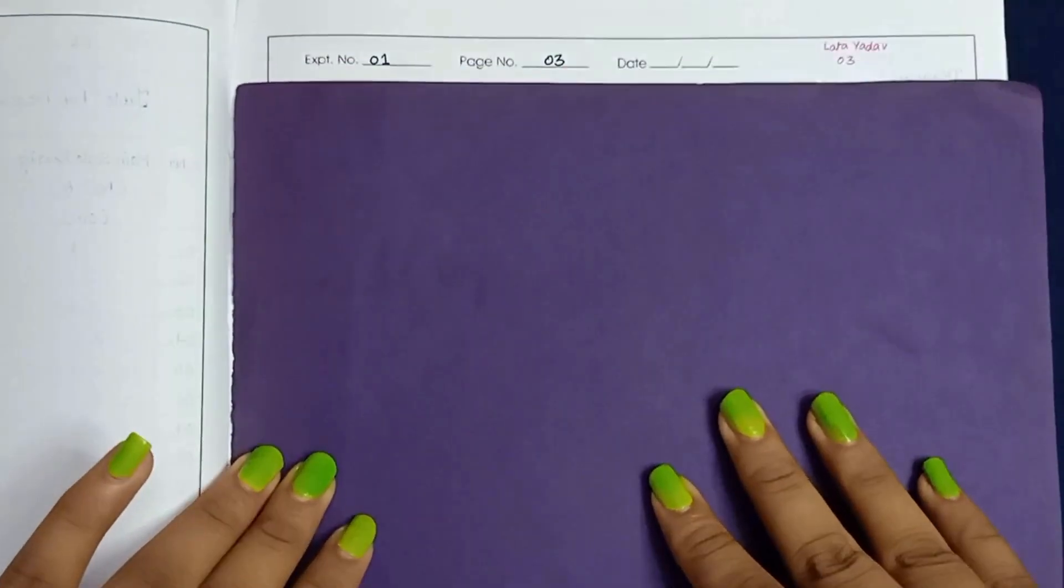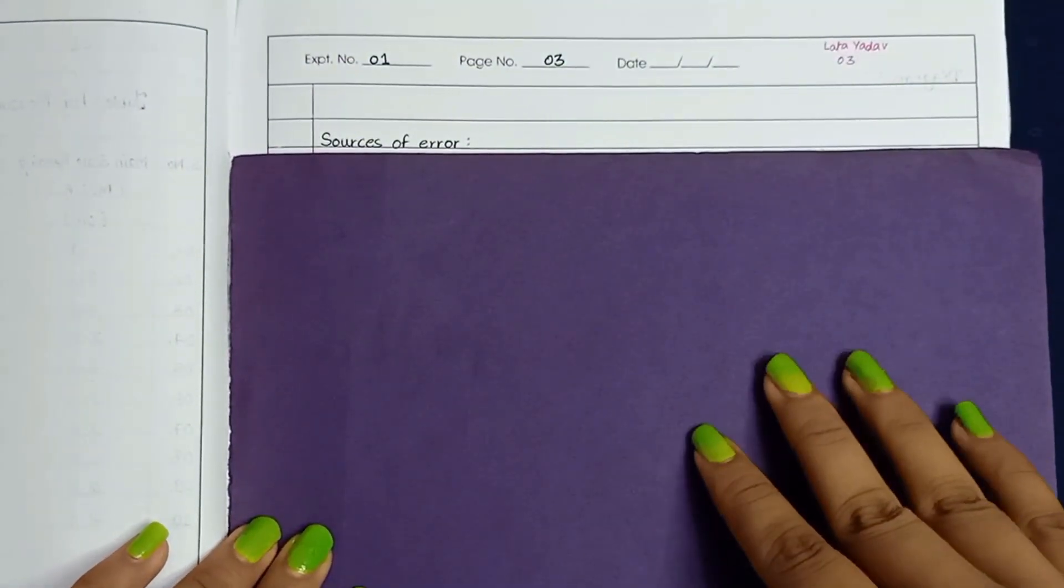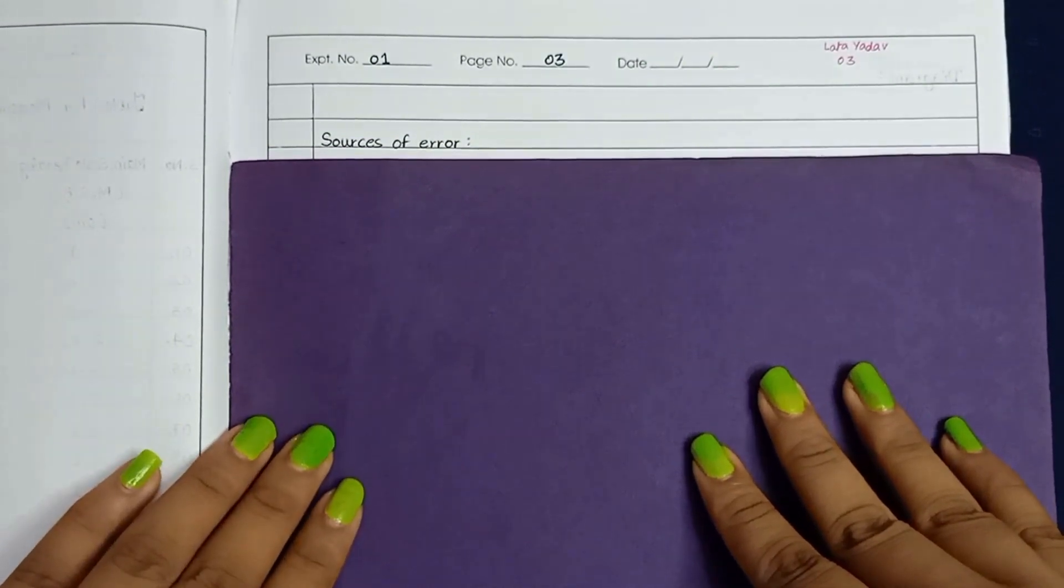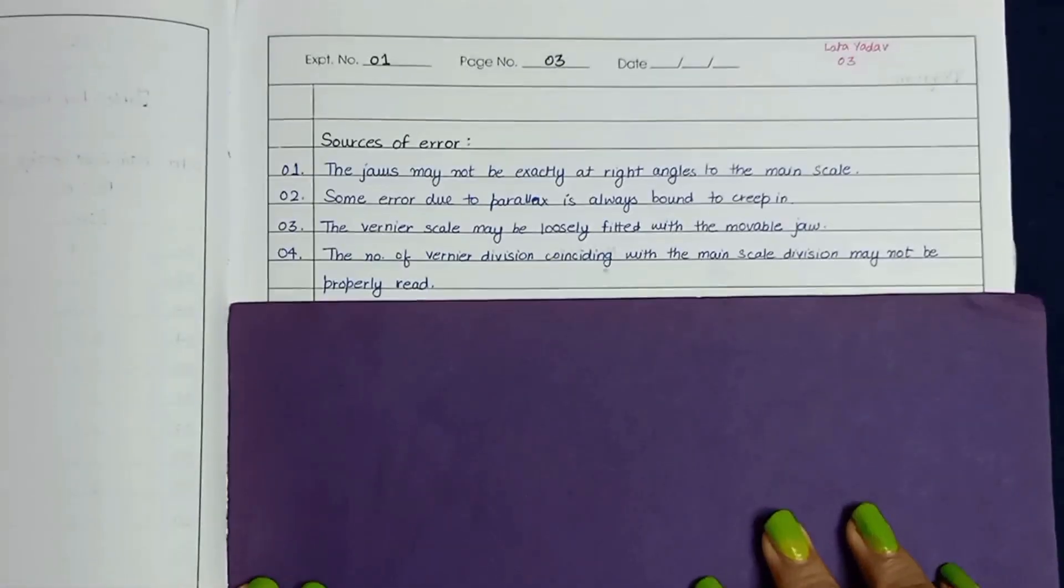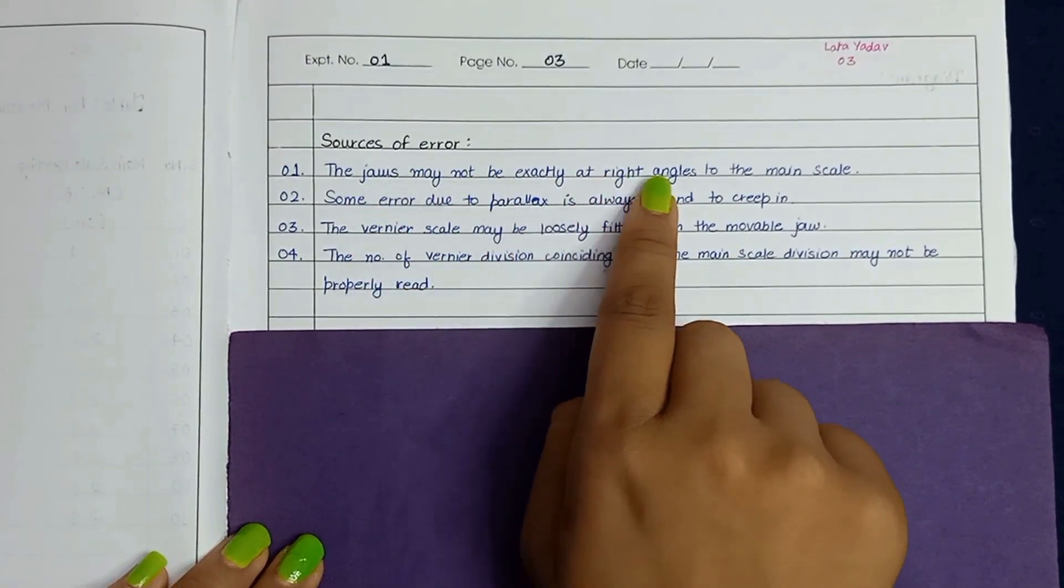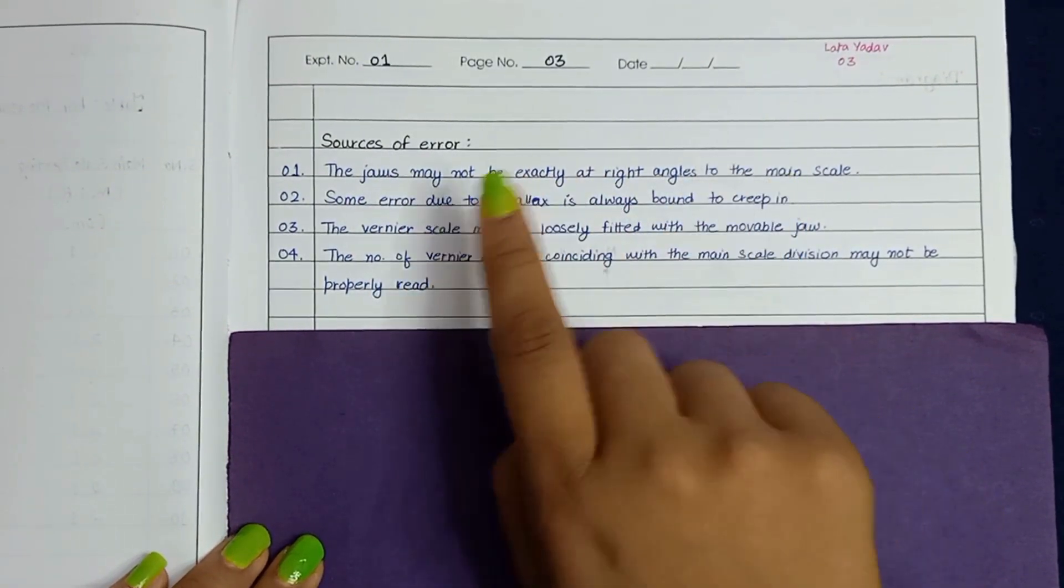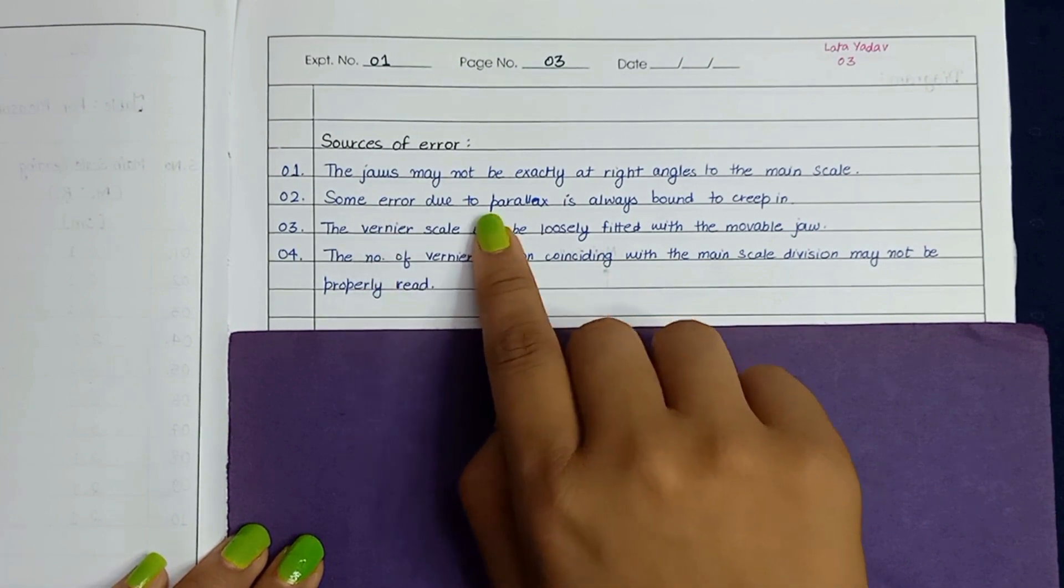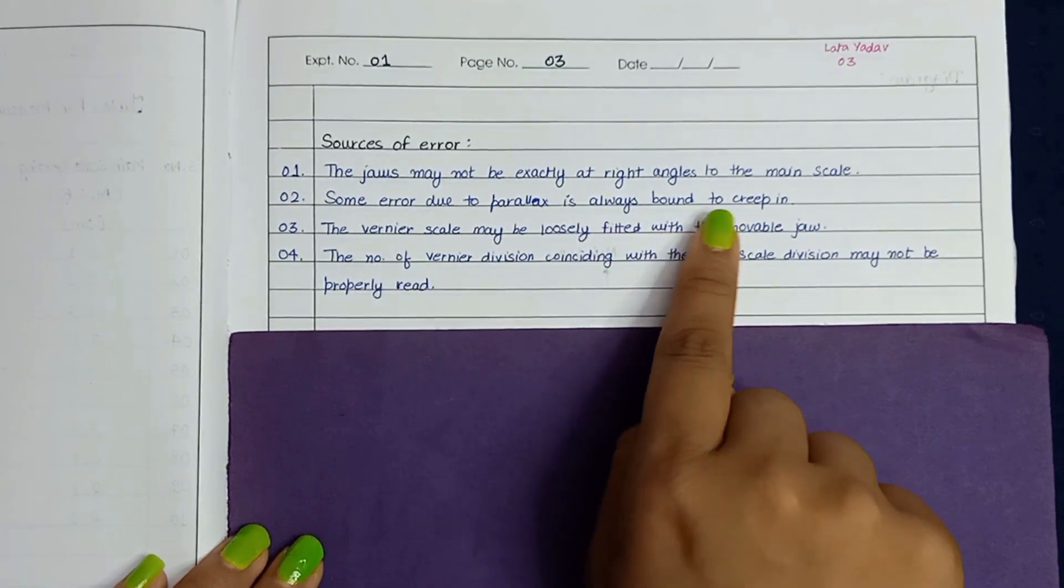Next, and the last one: source of error. Source of error of this experiment are the following. First, the jaws may not be exactly at right angles to the main scale. Second, some error due to parallax is always bounded to creep in.